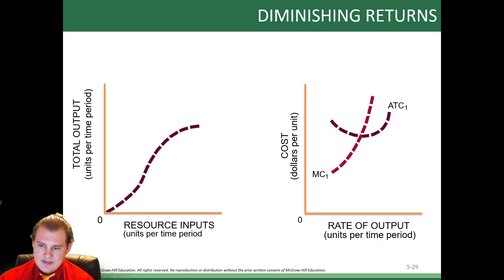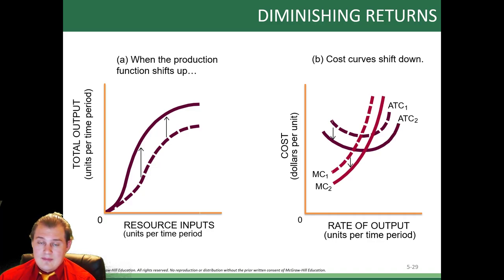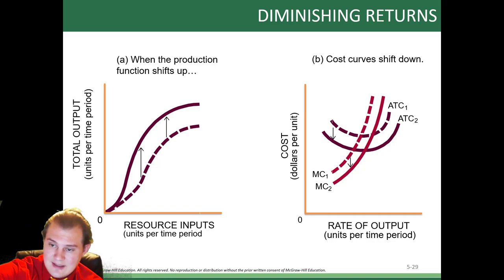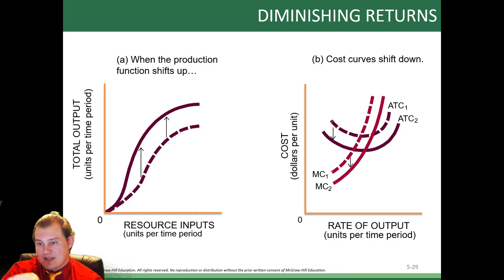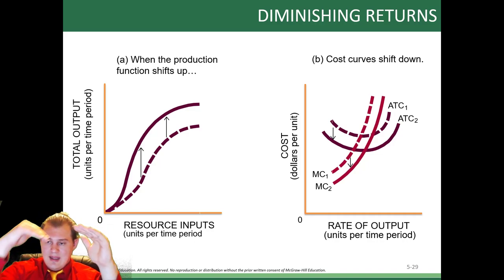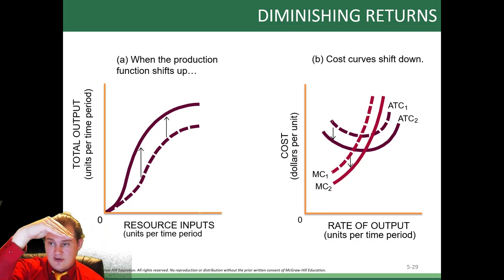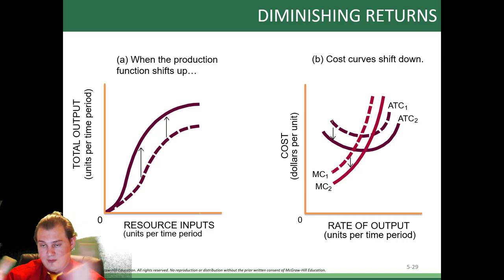They show graphs comparing resource inputs to rate of output — the same type we looked at before. When the production function shifts up, we're becoming more efficient: producing more with the same amount of stuff is the same as lowering cost per unit. So the ATC curve will shift down, and marginal costs follow the same pattern. If a production curve goes up, cost curves shift down, and vice versa. If we're ever comparing the two, they're the same thing.